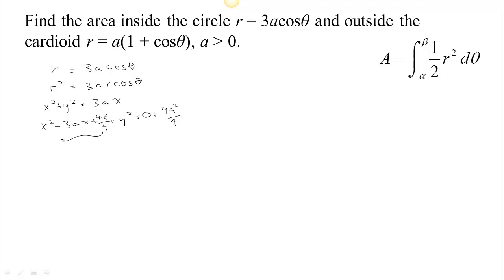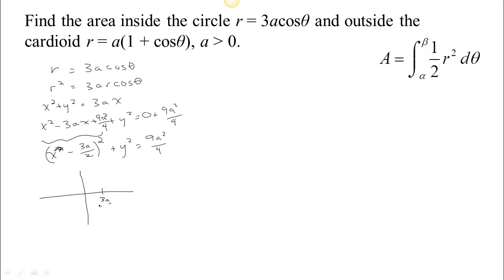This becomes the perfect square: x minus 3a over 2, squared, plus y squared equals 9a squared over 4. So we have a circle of radius 3a over 2 centered at (3a/2, 0). Basically our center is here at 3a over 2, and the radius is also 3a over 2, so the circle just barely reaches back to the origin.